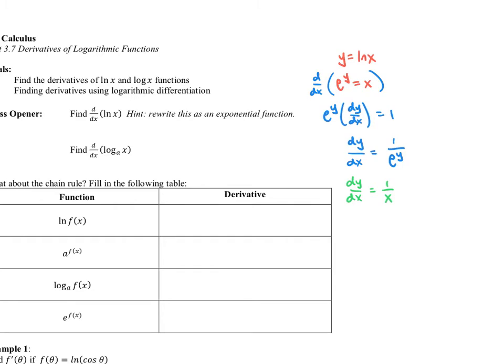So that's the derivative you've memorized — just a little proof to show where it comes from. For log base a of x, you could do a similar proof, but I'll just remind you the derivative is 1 divided by x·ln(a). That's another one to memorize. It's not very common, but we need to be prepared if it shows up.